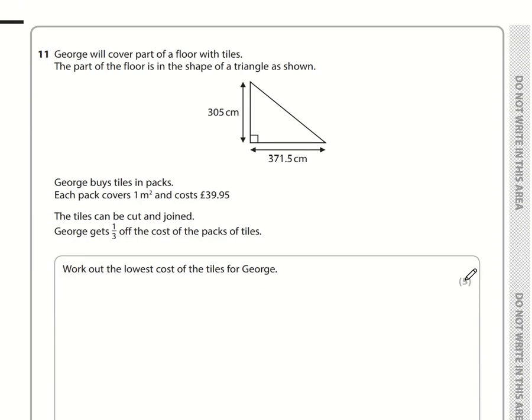Question 11. George will cover part of a floor with tiles in the shape of a triangle. The most sensible starting point is to work out the area of the triangle. We're buying tiles in square meters, so I'll turn these centimeters into meters. Divide by 100: that is 3.05 meters and 3.715 meters. This is a triangle, so the total area is 3.05 multiplied by 3.715 divided by 2.